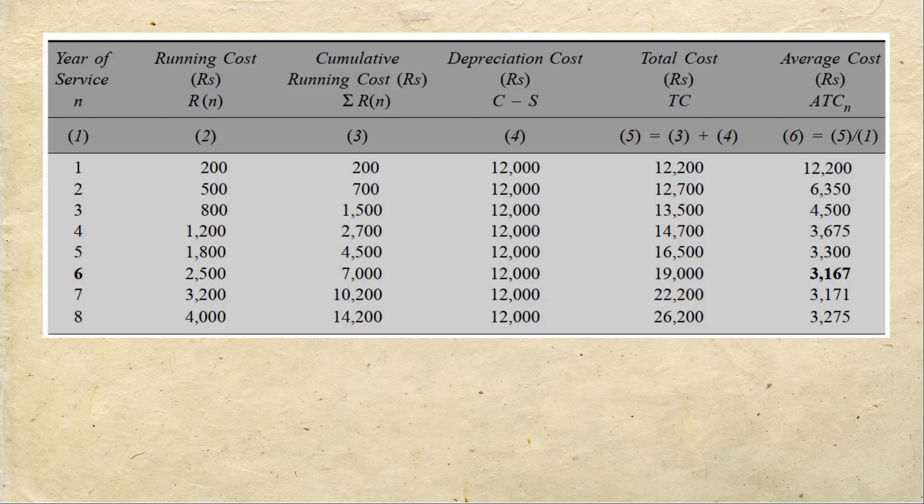We make a table where on the first column we have the years of service. Then in the next column we write the running cost for the year, and then the cumulative running cost. The running cost for every year is 200, first year is 200, second year is 500, third year is 800, and the cumulative cost is the sum which is 1500. From this you go to the fourth column. In the fourth column you calculate C minus S, the capital cost minus the salvage value. The capital cost in this problem was 12,200 rupees and the salvage value was 200 rupees. So C minus S is 12,000 rupees.